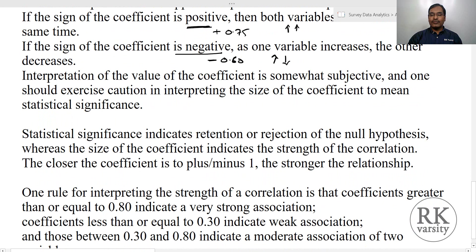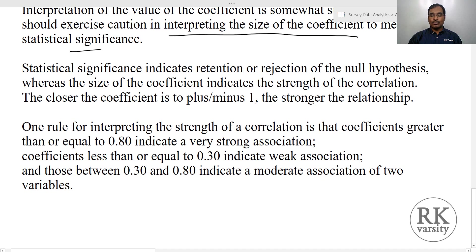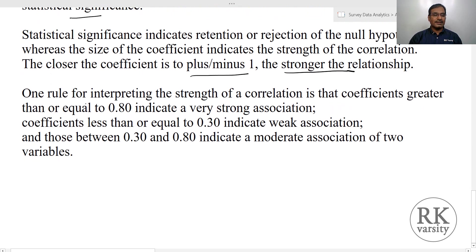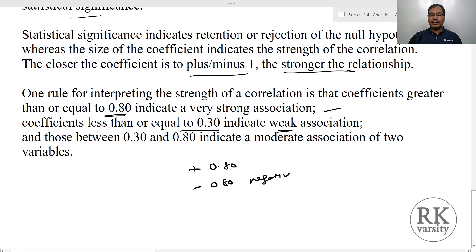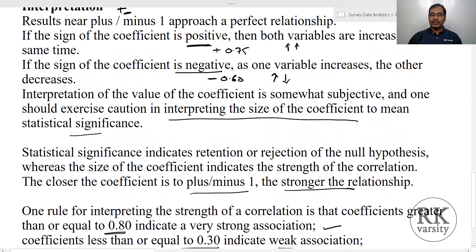Interpretation of the coefficient value is somewhat subjective, and one should exercise caution in interpreting the size of a coefficient relative to statistical significance. The closer the coefficient is to plus or minus 1, the stronger the relationship. As a benchmark: a coefficient greater than or equal to 0.8 indicates a very strong association; less than or equal to 0.3 indicates a weak association; and any value between 0.3 and 0.8 indicates a moderate association. This applies to both the positive and negative sides.